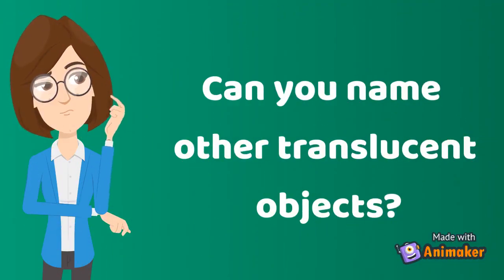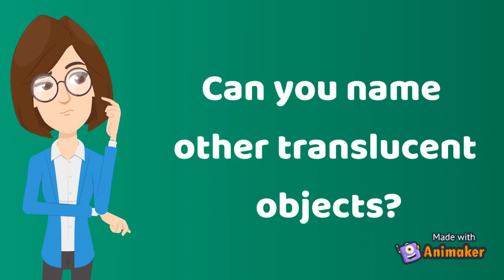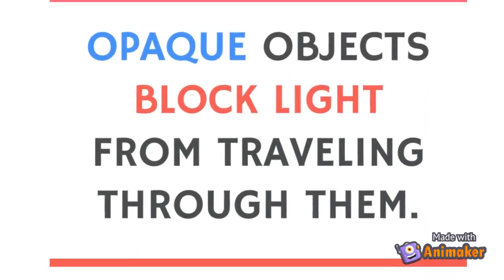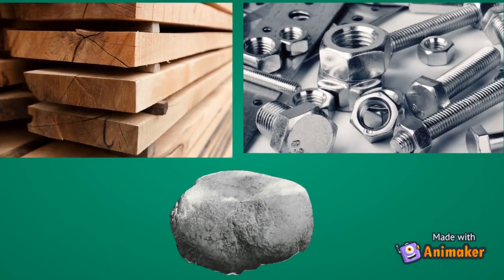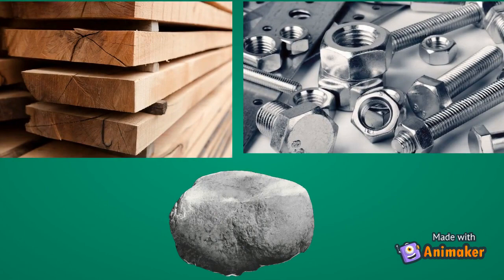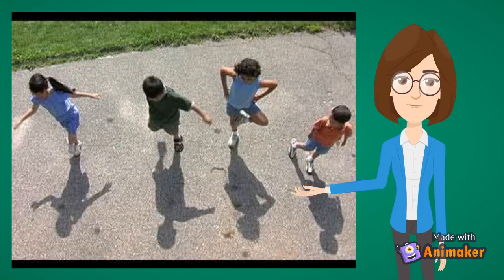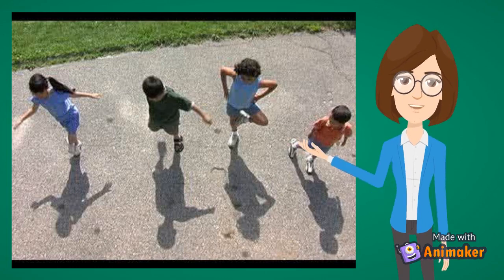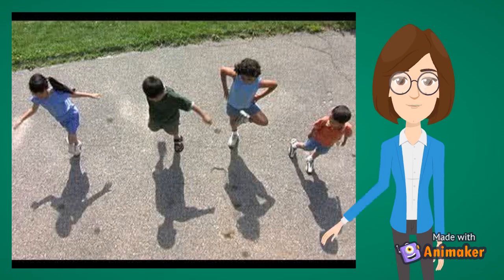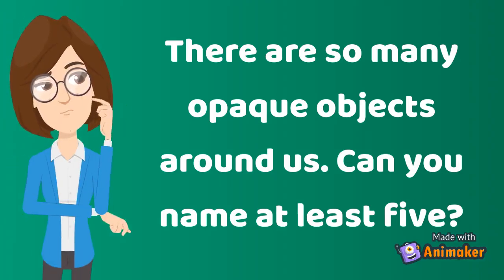Can you name other translucent objects? Opaque objects block light from traveling through them. Materials such as wood, stone, and metals are opaque. Shadows are formed when an opaque object comes in the path of light. There are so many opaque objects around us — can you name at least five?